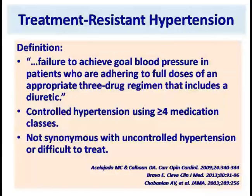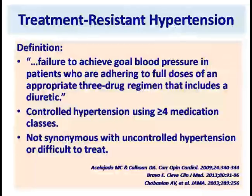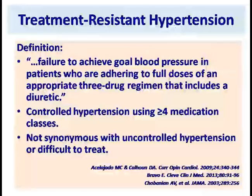Treatment-resistant hypertension is defined as a failure to achieve goal blood pressure in patients who are adhering to full dosage of an appropriate three-drug regimen that includes a diuretic. This is a rather complex definition, but to understand it, it's important that all of you realize that there are three components to it.